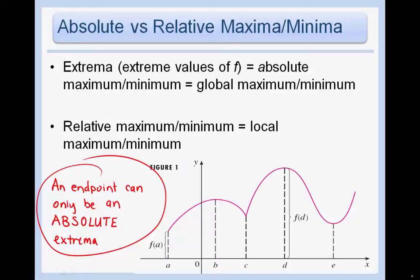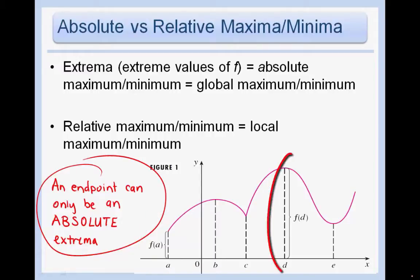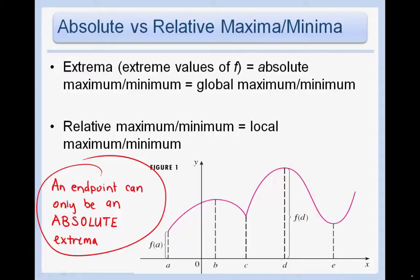In this graph, we see that we have an absolute minimum at point a, and the absolute minimum value would be f(a). We have an absolute max at point d, and the absolute maximum value would be f(d). Our local max's would be at b and at d, and our local min's would be at c and at e.